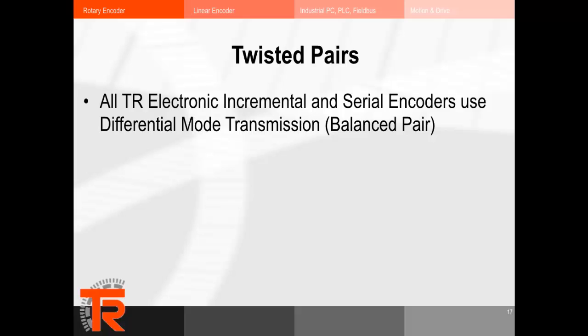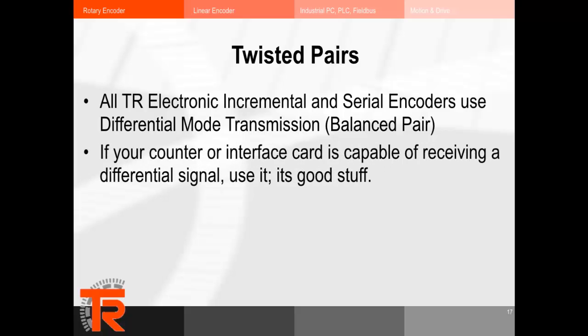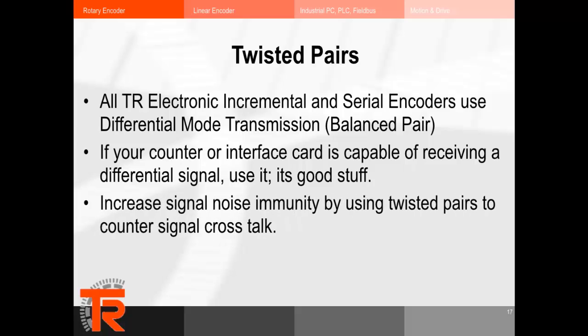Let's talk about twisted pair. All TR Electronic incremental and serial encoders use differential mode transmission, or balanced pair. If your counter or interface card is capable of receiving a differential signal, use it — it's good. Twisted pair increases signal noise immunity by countering signal crosstalk. If you use a cable with multiple non-twisted pairs, one pair can induce crosstalk into another, and it's additive along the length of the cable, getting worse the longer the cable is. Twisting the pairs counters this effect because with each half-twist, the wire nearest to the noise source is exchanged, minimizing crosstalk.